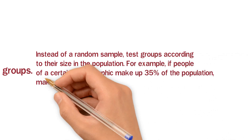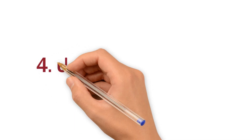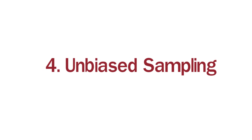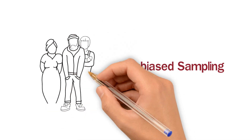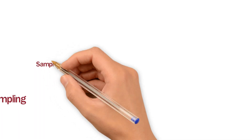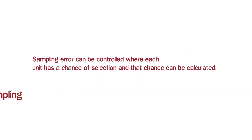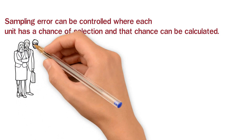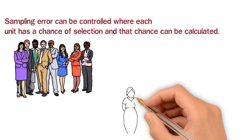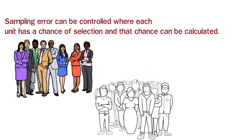Instead of a random sample, test groups according to their size in the population. For example, if people of a certain demographic make up 35% of the population, make sure 35% of the study is made up of this variable. The fourth point is unbiased sampling. Unbiased sampling means you are selecting your sample in a completely neutral and fair way, giving every individual an equal chance to be part of your sample. Unbiased sampling also helps reduce sampling error.